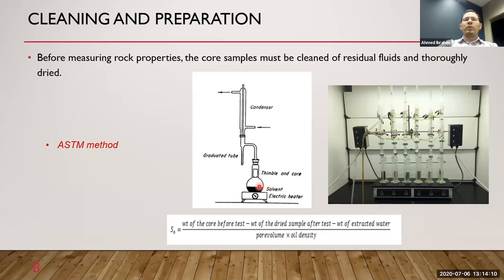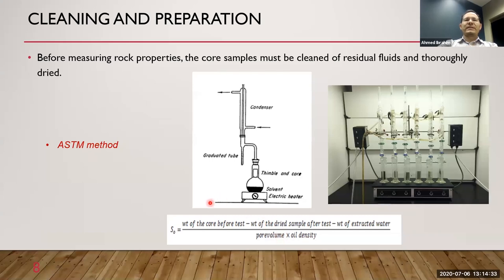By collecting the water, we can know the initial water volume inside the core. We can also evaporate the toluene from the extract and the remainder will be oil, telling us how much oil was in the core. Another technique to get oil saturation is finding the difference in weight of the core before the test minus the dry core minus the extracted water, divided by the pore volume.